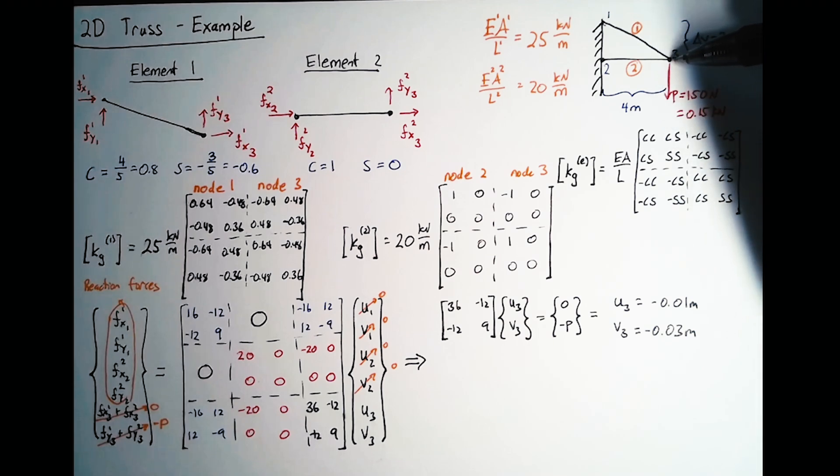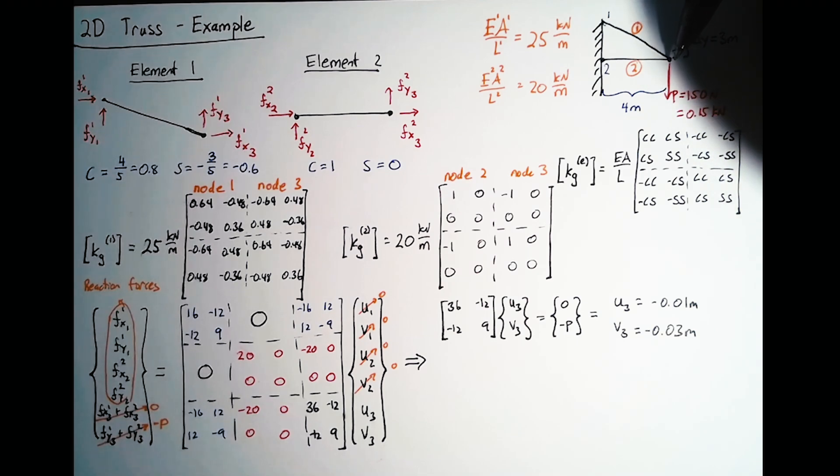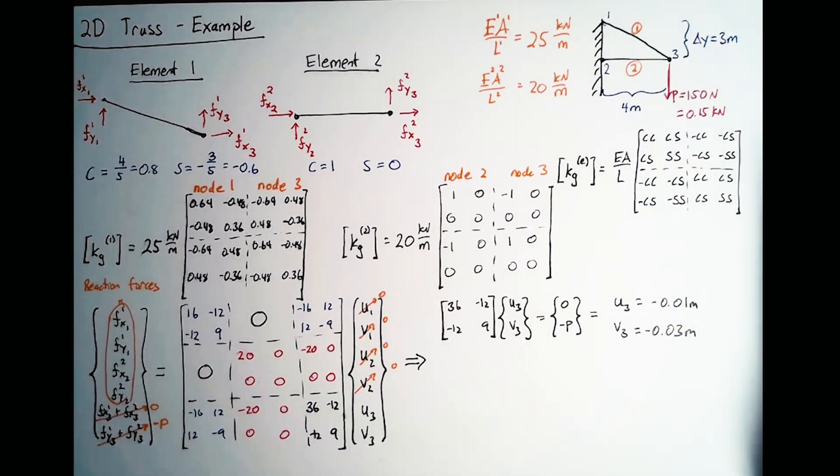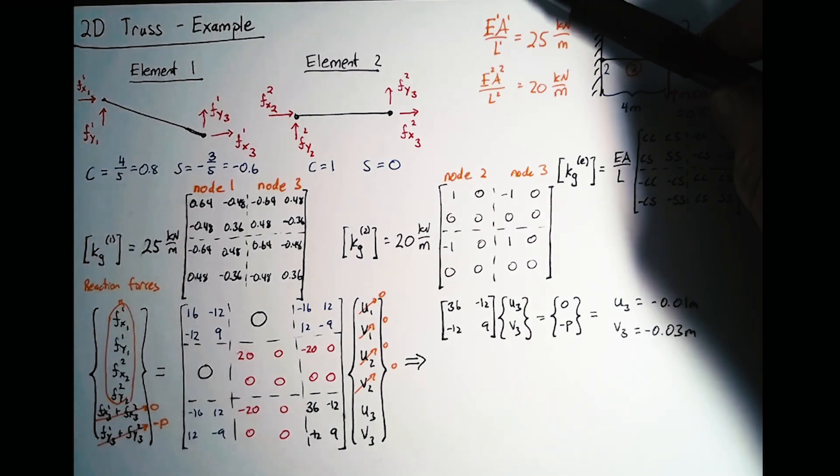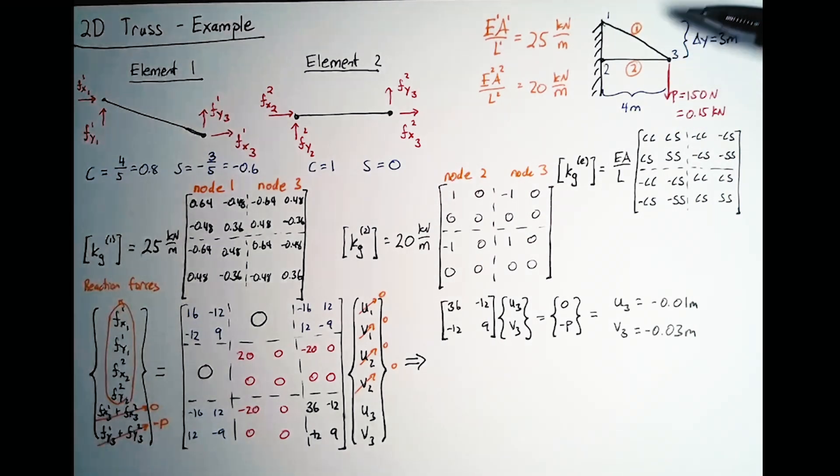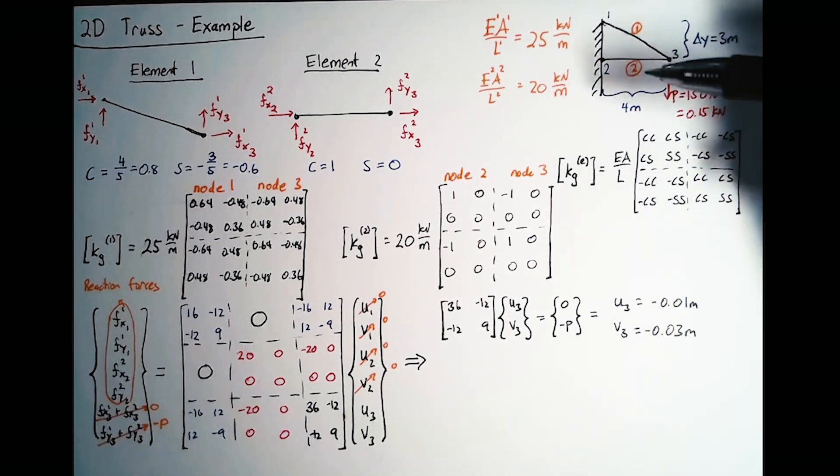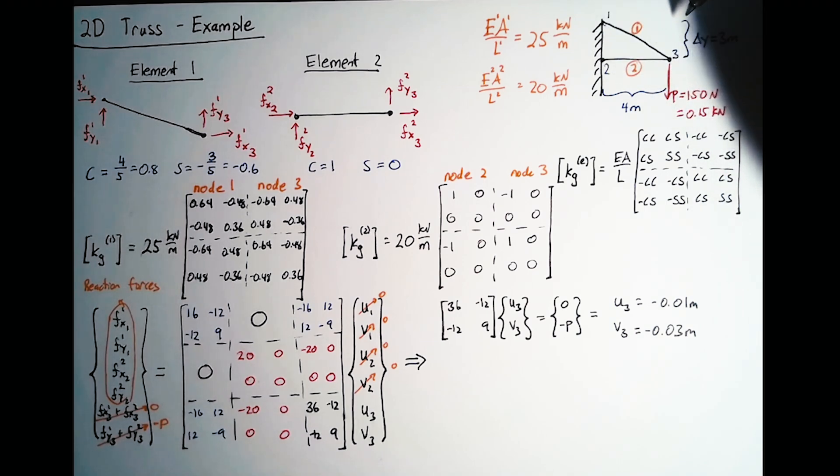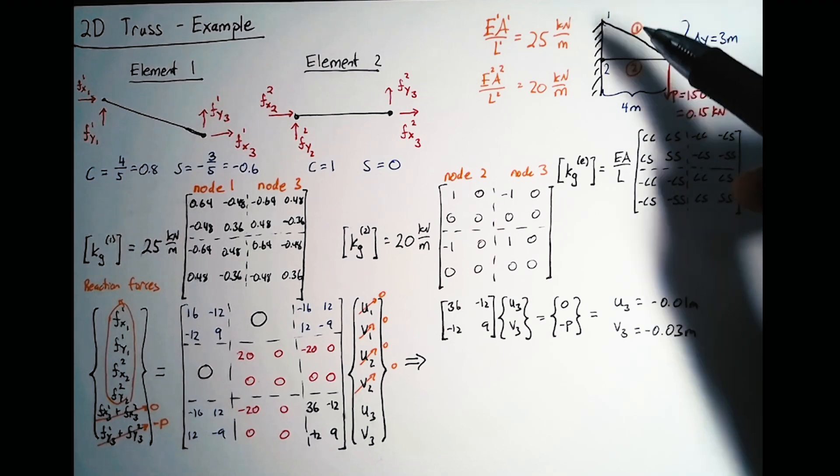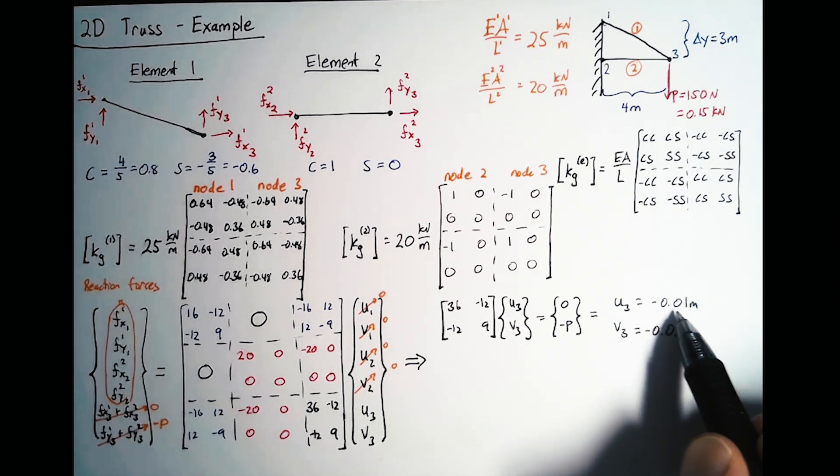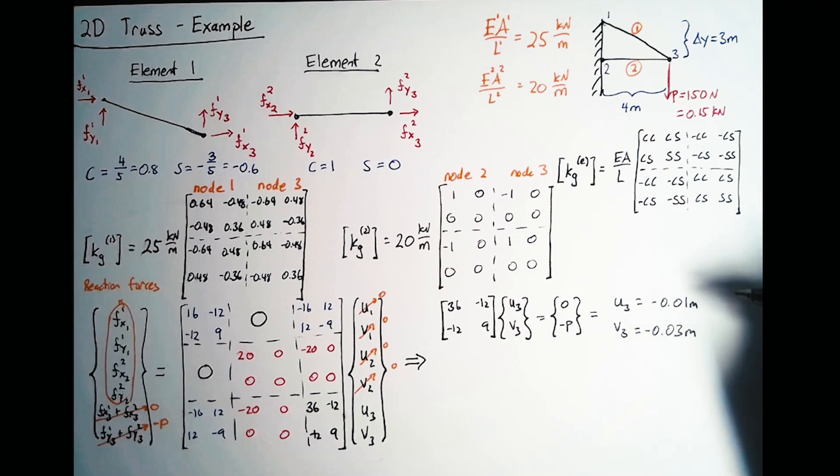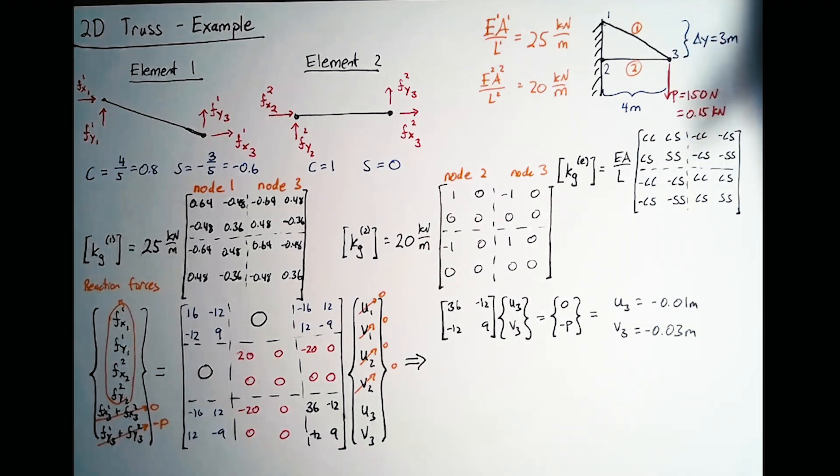Let's look at our problem again to double check that these answers make sense. If we're pushing down on node 3, we'd expect V3 to be negative. If we're applying a moment, we'd expect this entire truss system to kind of bend this way because it has to twist based on that moment. That P is applying a moment, causing the entire truss to twist, which would bring node 3 towards the left, in the negative x direction. Both values make sense in terms of sign, and V3 is larger than U3, which also makes sense.